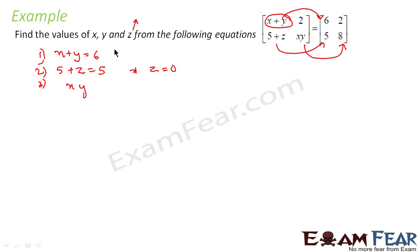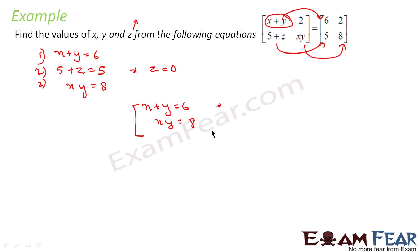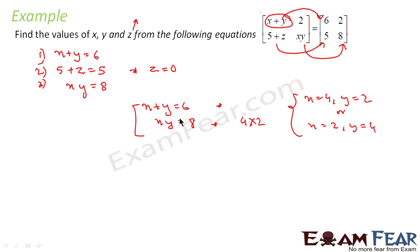From the second equation, 5 + z = 5, so z = 0. Now I have to find x and y given x + y = 6 and x·y = 8. We can solve this using a quadratic equation, but logically, 4 × 2 = 8 and 4 + 2 = 6, so x = 4 and y = 2 is one solution.